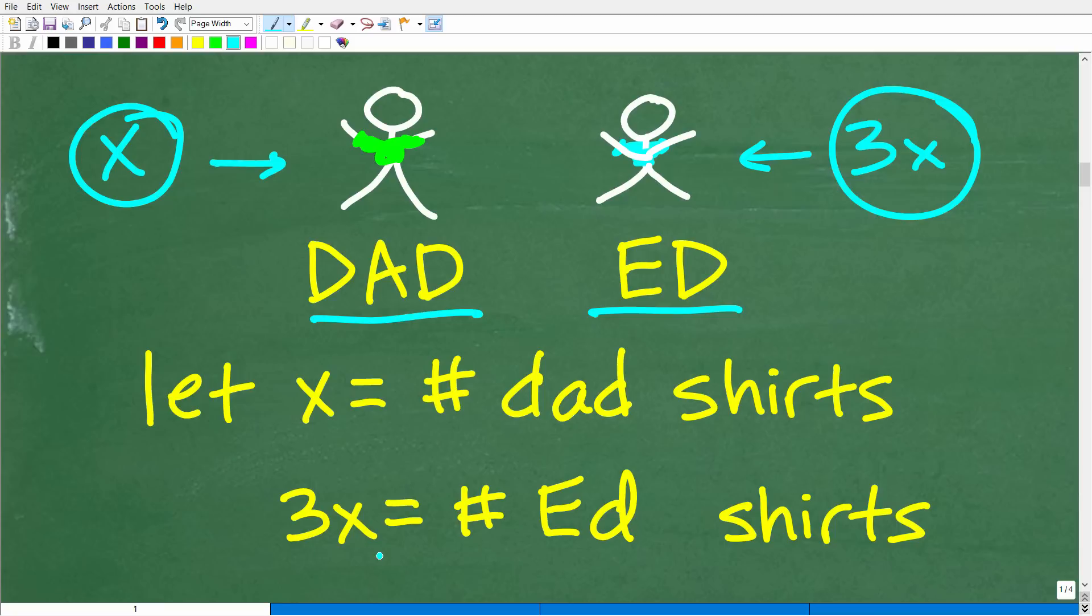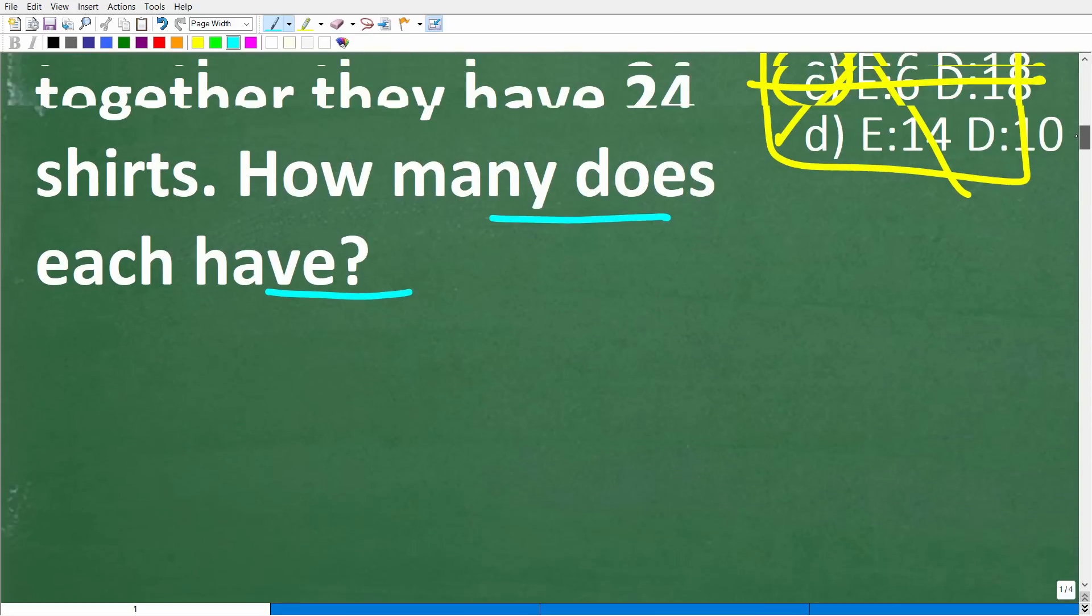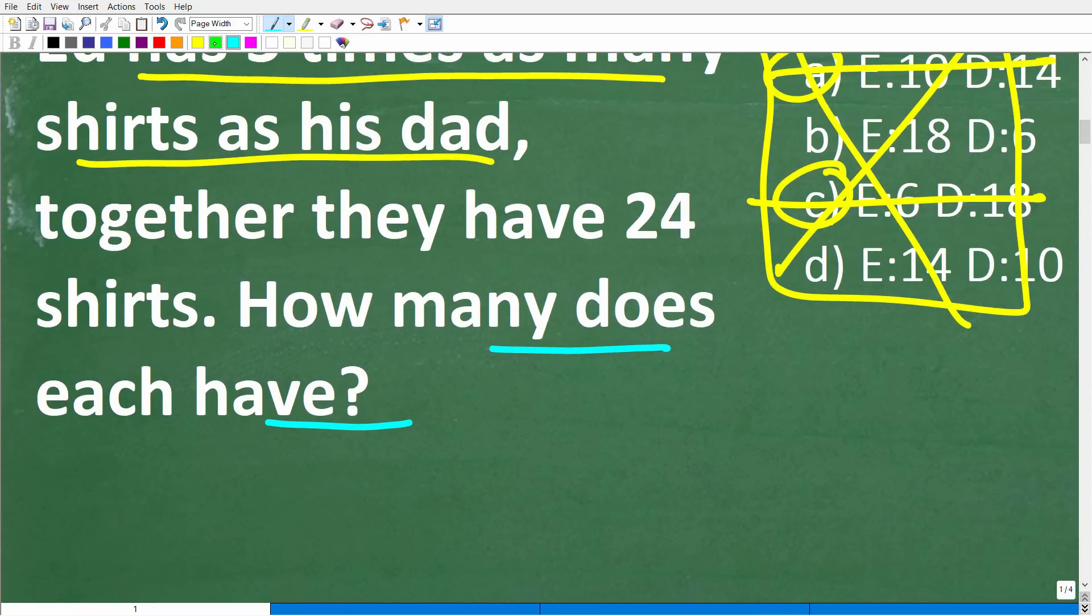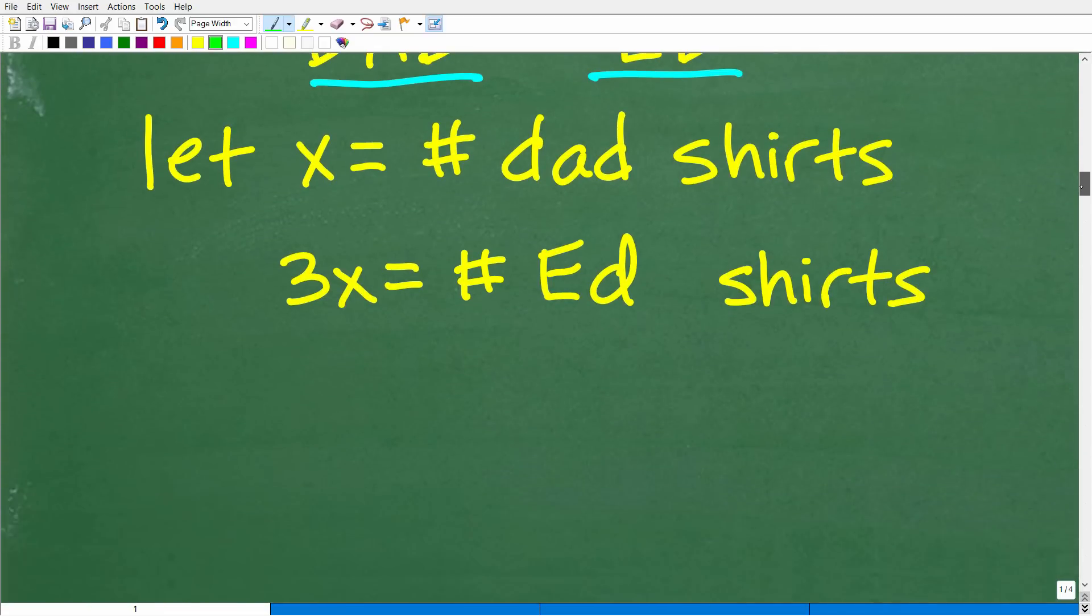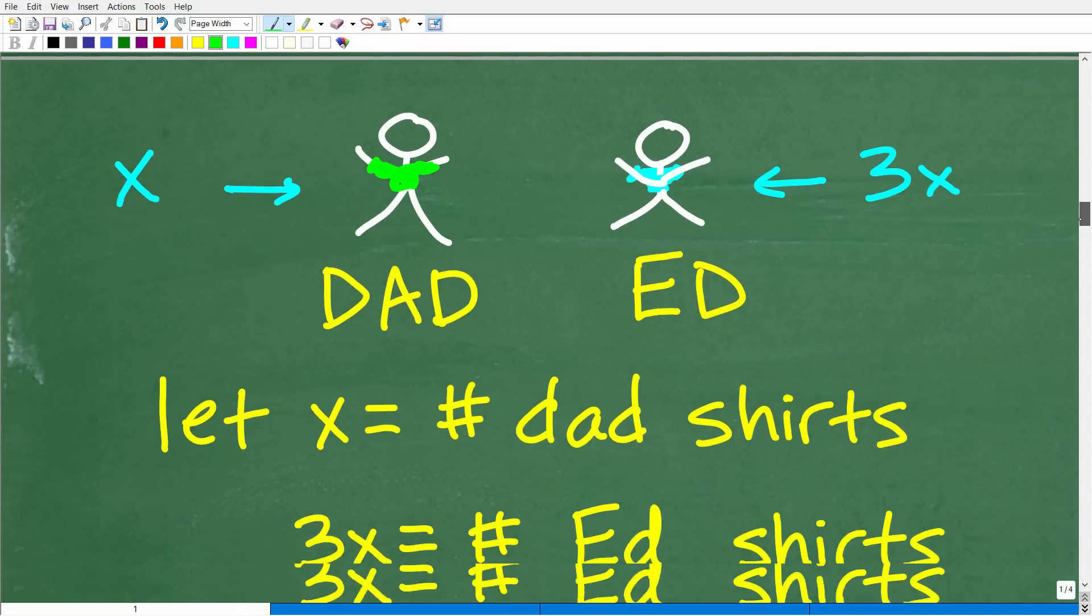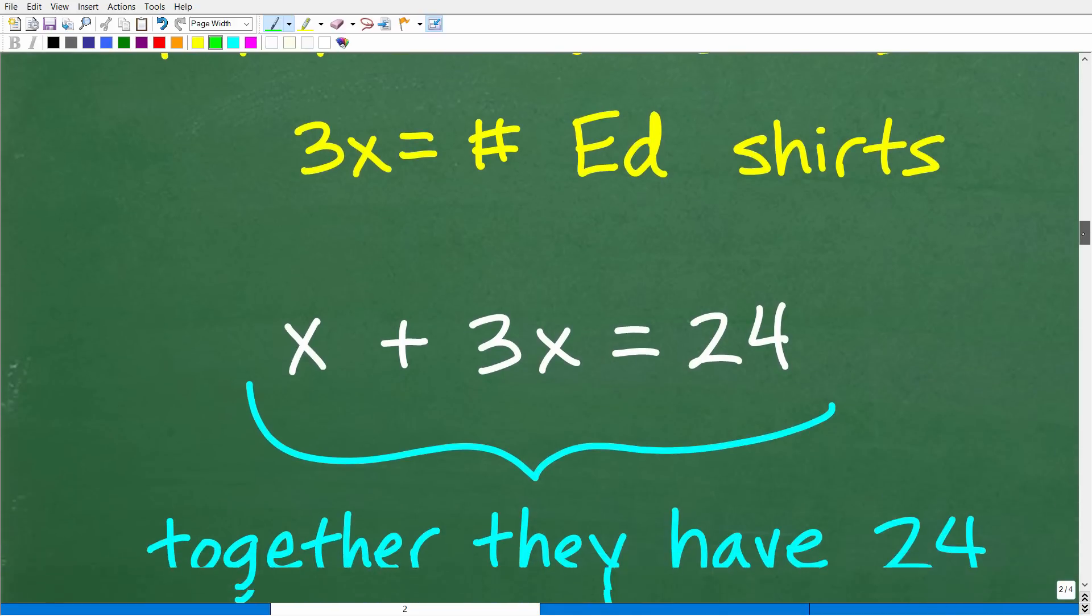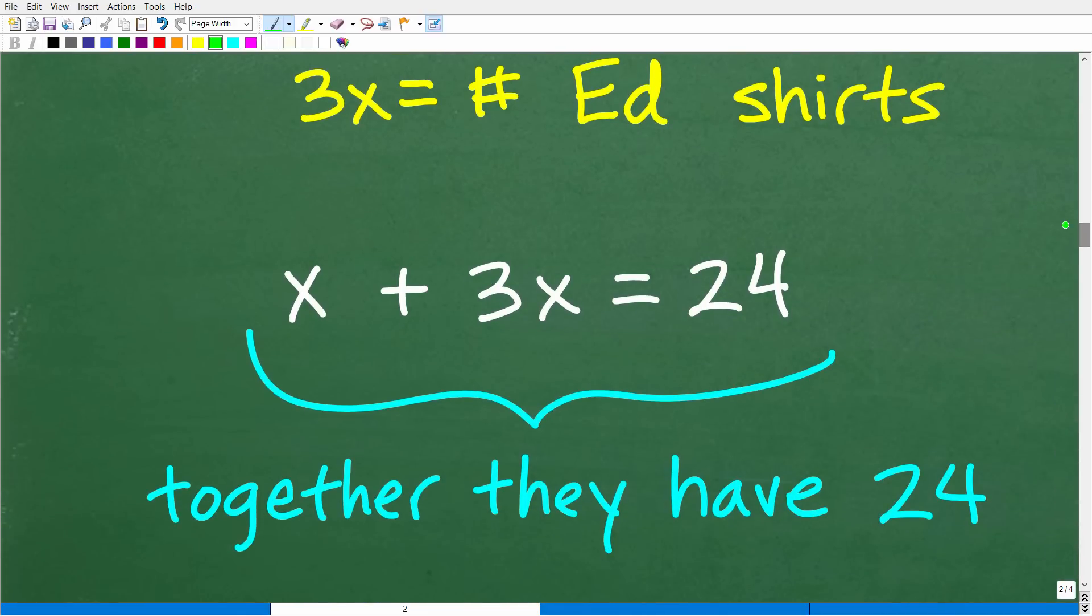Well, we have two variables here. Actually, we only have one variable, two variable terms, X. But we need an equation to solve for X. So we need to use some other information from the problem. And of course, right here, we can use this part of the problem. Together, they have 24 shirts. So we can construct a lovely little equation here. And that will look like this. All right. So X plus 3X is equal to 24.